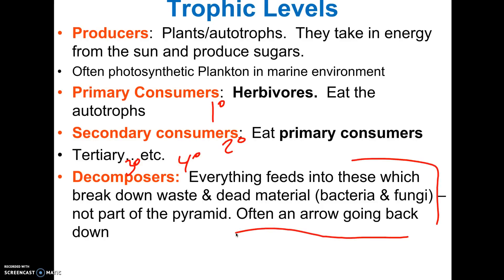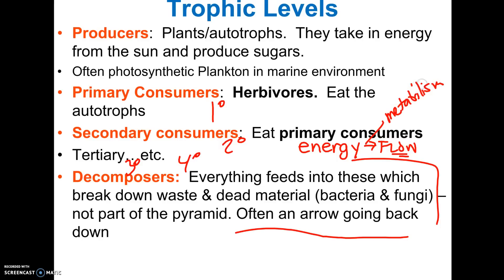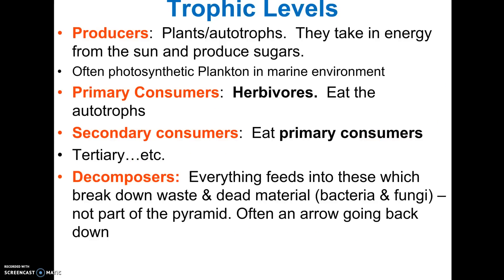Energy cannot be recycled — energy flows through an ecosystem. Starting with the sun, a majority of energy ends up being used for metabolism, its final form being heat. Matter is cycled through ecosystems. Decomposers can recycle the carbon, oxygen, nitrogen, and phosphorus, and those things can go back into the ecosystem again.